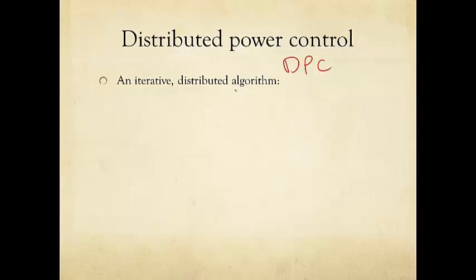This is an algorithm — a distributed and iterative algorithm. What is an algorithm? Roughly speaking, it is a sequence of computational steps that is finite, and when it stops, it has accomplished certain tasks — in this case, solving the power control problem.